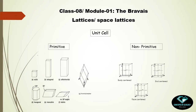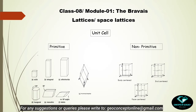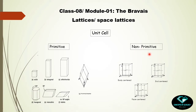We already learned about these three-dimensional lattices called space lattices. In these three-dimensional arrangements we discussed two types of unit cells: first, primitive, and second, non-primitive. In the case of primitive unit cells we had seven basic shapes, and according to them the entire universe of crystals or minerals were grouped into seven crystallographic systems. For non-primitive unit cells there were three types: body-centered, end-centered, and face-centered.